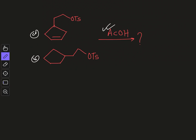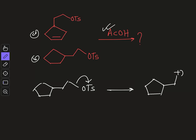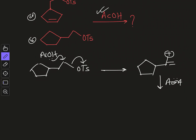For compound B, it is a simple substrate where you can see the OTs group is present. If solvolysis occurs here, this OTs group leaves and you would form a carbocation. However, it should actually be an SN2 reaction because this primary carbocation would not be stable. The product you are going to get from B is the OAc product.